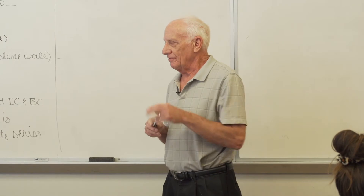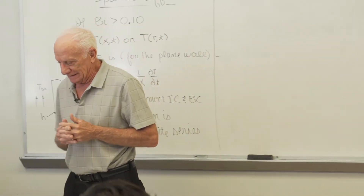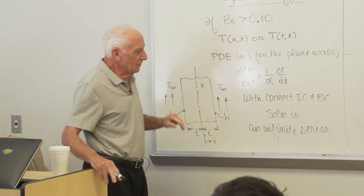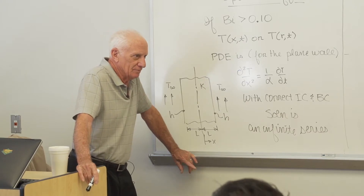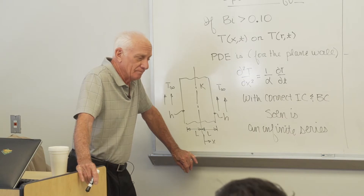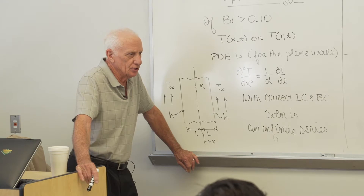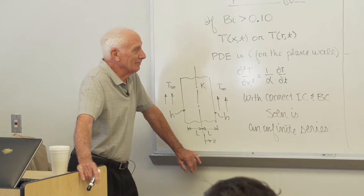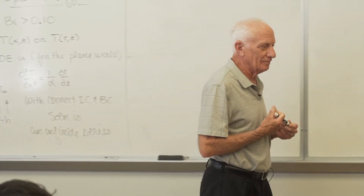In Chapter 5, there's a very important dimensionless number called the Biot number. Its significance is that if it's less than 0.1, we can use a very simple model to calculate how the temperatures of an object and conduction heat transfer vary with time. There are only really two equations: one gives you the temperature as a function of time, and the other gives you the amount of energy transfer Q. If the Biot number is greater than 0.1, we can no longer use that very simple model, which is called the Lumped Heat Capacity Model, LHC.